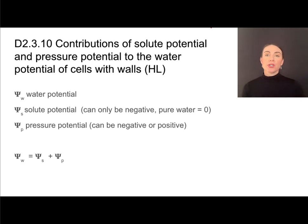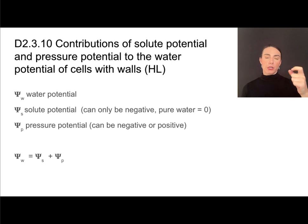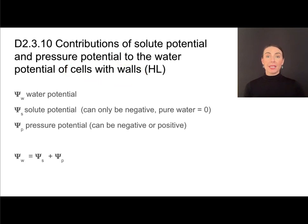Pressure potential can be either positive or negative — it can be due to atmospheric pressure or to pressure within a cell. We will look at the application of this in cells with walls, particularly in plants.